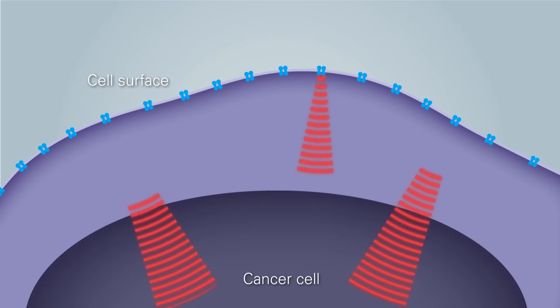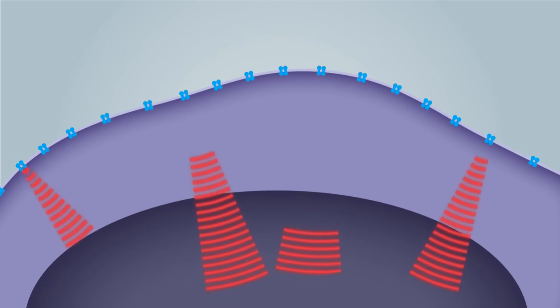Typically, in cancer cells, growth signals come from receptors on their cell surface.